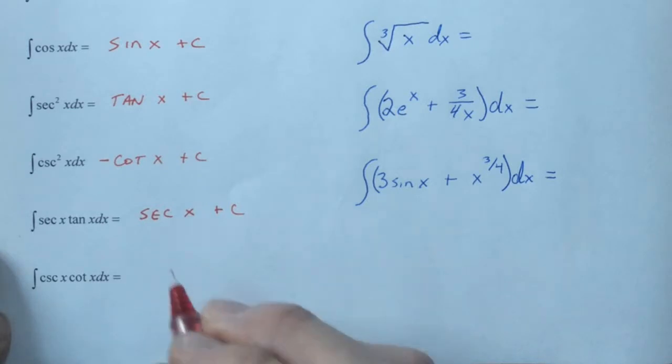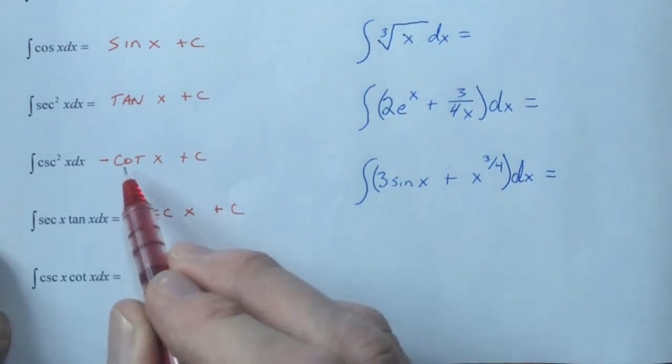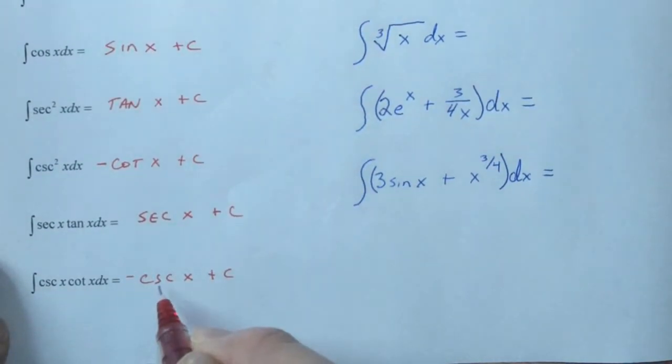And then cosecant and cotangent, that's our cosecant function. But once again, just like cotangent and cosine, this one needs to be negative, since the derivative of cosecant is actually cosecant times cotangent, but it's negative. We don't have the negative sign, so the negative counterbalance is there.